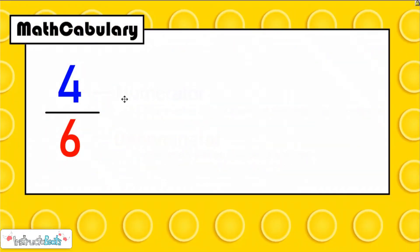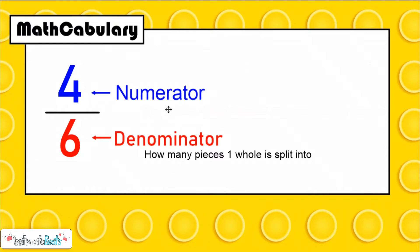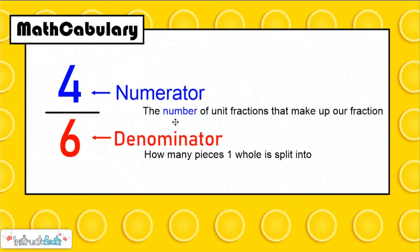Here we have a fraction, and we know that the top part of our fraction is called the numerator and the bottom part is called the denominator. The denominator is how many pieces one whole is split into — that's going to be a very important concept today. And our numerator tells us the number of unit fractions that make up our fraction. This is just a little bit of a review because we're going to be using these terms in our lesson today.